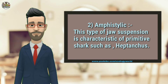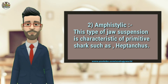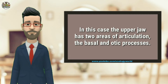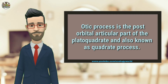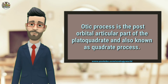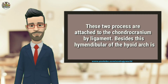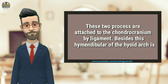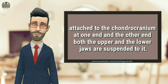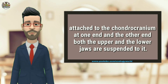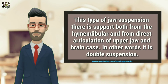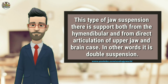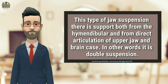Amphistylic jaw suspension is characteristic of primitive sharks such as Heptanchus. In this case, the upper jaw has two areas of articulation: the basal and the otic process. The otic process is the post-orbital articular part of the palatoquadrate, also known as the quadrate process. These two processes are attached to the chondrocranium by ligament. The hyomandibular of the hyoid arc is attached to the chondrocranium at one end, and at the other end both upper and lower jaws are suspended to it. This type supports both from the hyomandibular and from direct articulation of the upper jaw and brain case — in other words, it is double suspension.